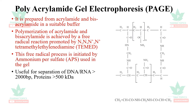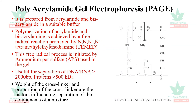Polyacrylamide gel electrophoresis is useful for separation of DNA and RNA greater than 2000 base pairs and proteins greater than 500 kilodaltons. The weight of the cross-linker and proportion of the cross-linker are the factors which influence the separation of components of a mixture.